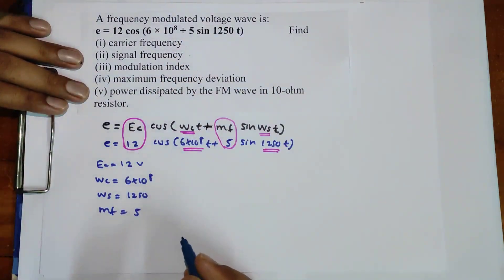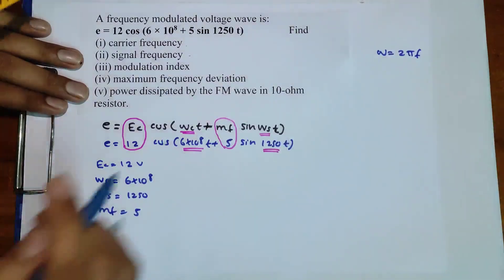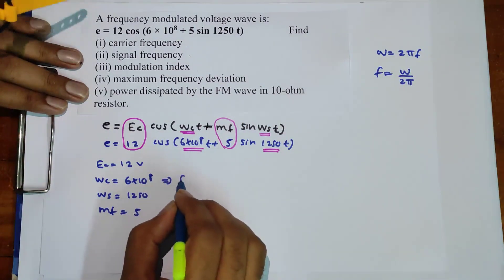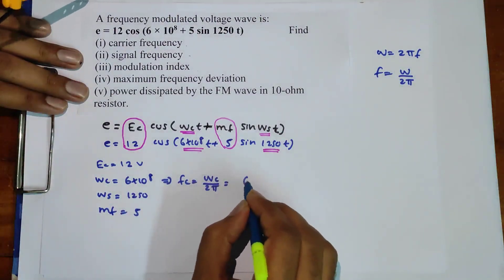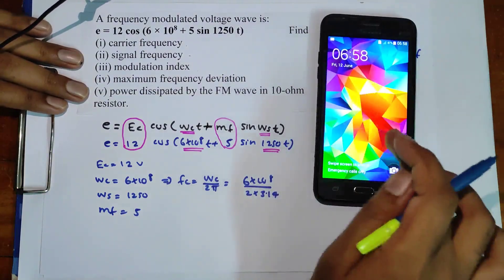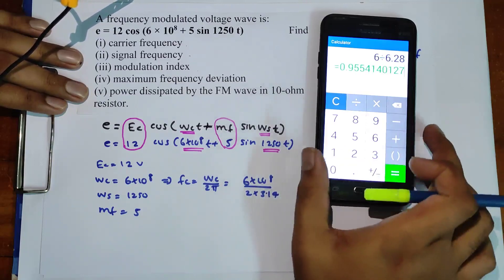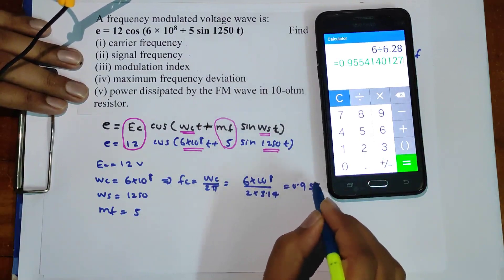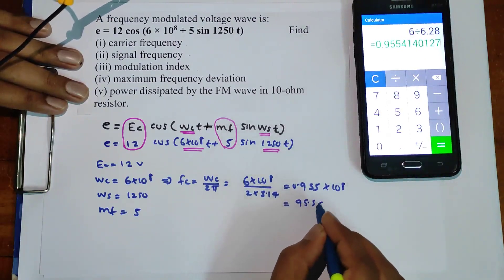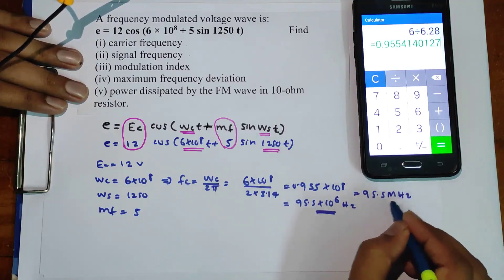The first question is the carrier frequency Fc. Using the relation omega = 2πf, the carrier frequency Fc equals omega_c divided by 2π, which is 6×10⁸ divided by 2×3.14, that is 6×10⁸ divided by 6.28, giving 0.955×10⁸, which equals 95.5×10⁶ Hz, or 95.5 megahertz.